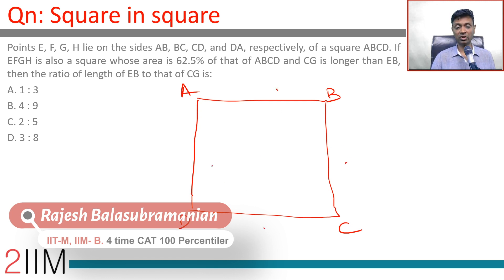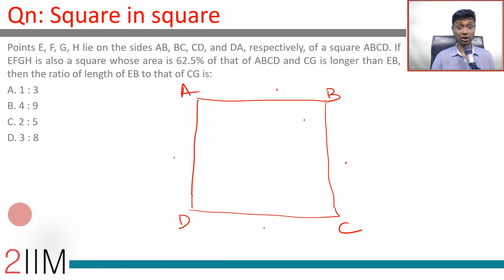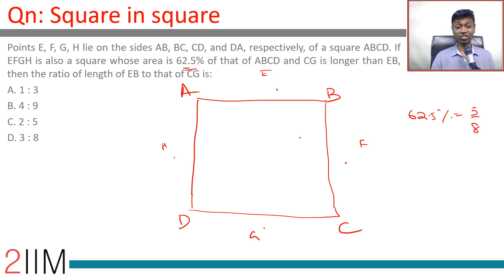E, F, G, H lie on these sides and EFGH is also a square whose area is 62.5% of that of ABCD, and CG is longer than EB. E is here, F is here, G is here, H is here. 62.5% is a lovely number — 62.5% is five-eighths.